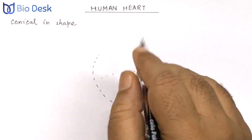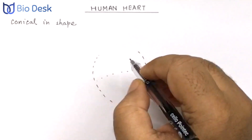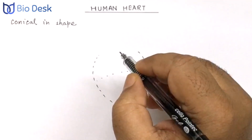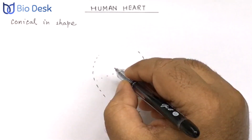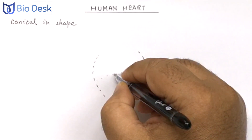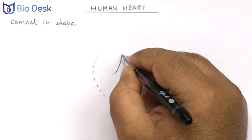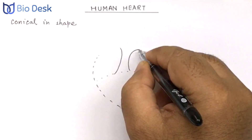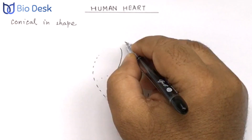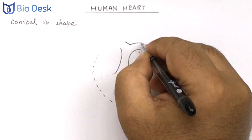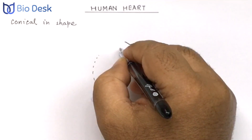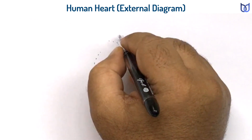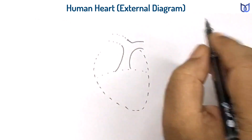After drawing the proper shape, start drawing the blood vessels arising from the heart. From the upper middle side of the heart, a thick blood vessel arises — this is the pulmonary aorta. This pulmonary aorta soon divides into two branches: one going towards the right side and another towards the left side.